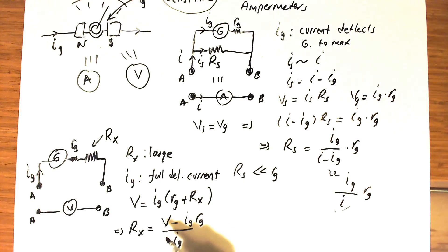If you want to measure voltages larger than IG·Rg, this expression tells you that Rx must be very large compared to the internal resistance of the galvanometer. This is because in the denominator we have the full deflection current, which is always much smaller than the numerator, making Rx large.